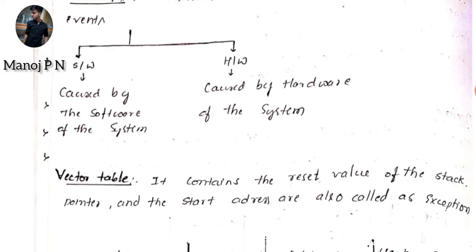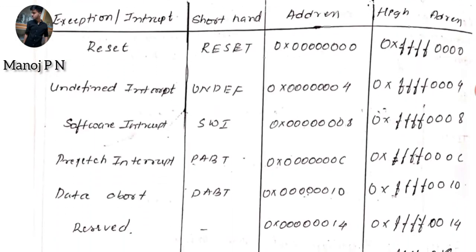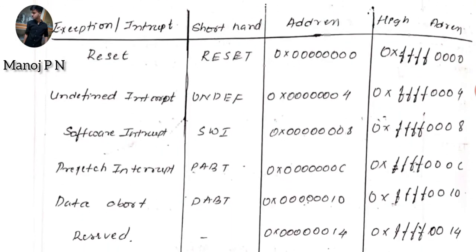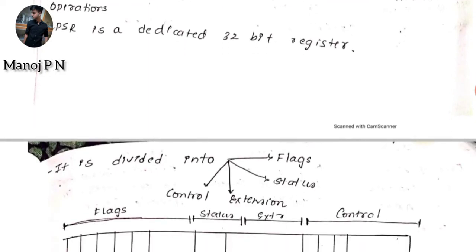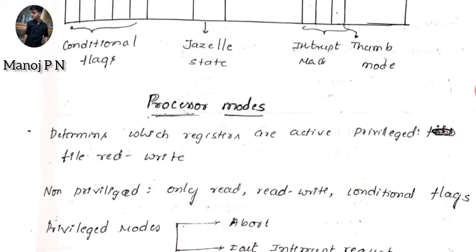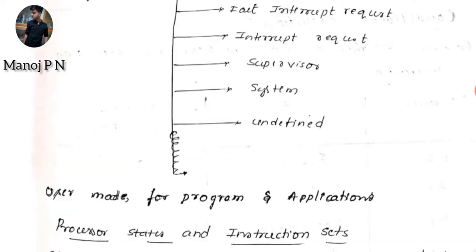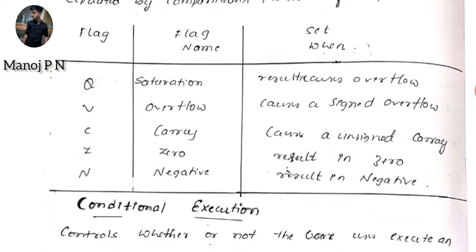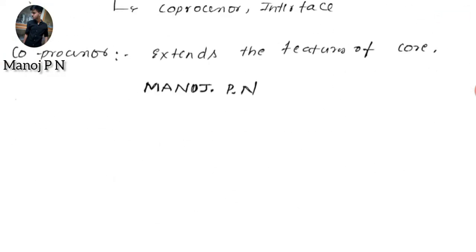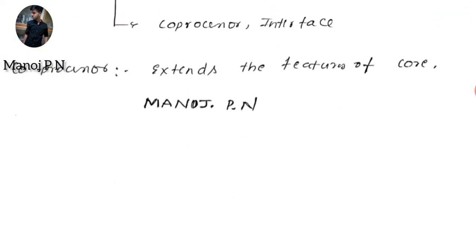We have interrupts and the vector table, which is most important and has been asked more than two times — do learn that. And processor modes, as I mentioned earlier. So if you go through these 14 pages of notes, I'm sure you can score full marks out of 14 in Module 1 of Microcontroller and Embedded Systems. I think this video will be helpful for you. Thanks for watching. Happy learning!